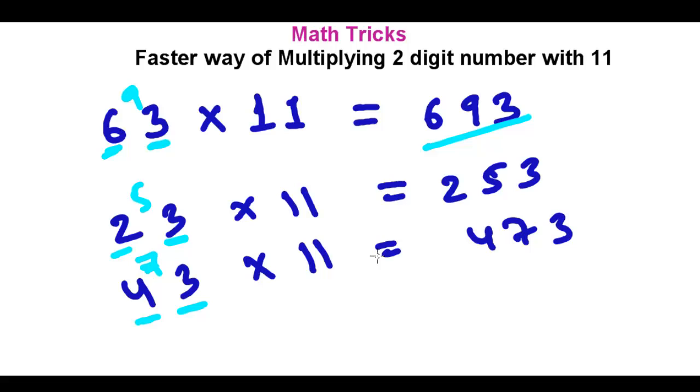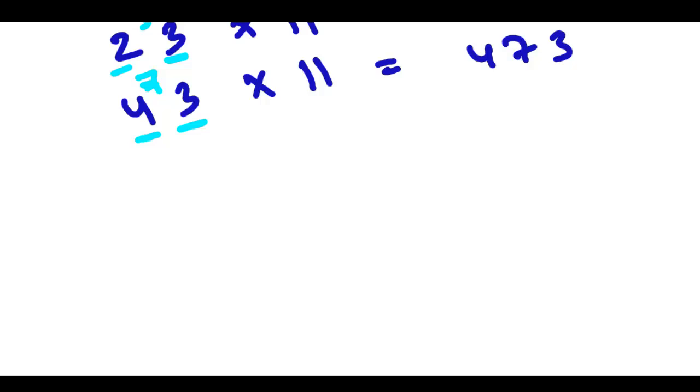Simply, what you have to do, you have to add the first number and the last number and the addition of both, you have to put into the middle. Just insert into the middle. Like this you can do with anything.